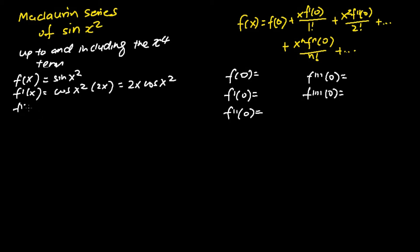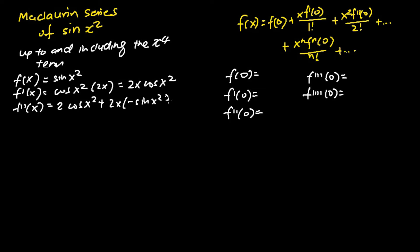For f''(x), we differentiate f'(x) one more time. In this case we have to apply the product rule of differentiation. We start with differentiating 2x to get 2, times cosine x squared. Then we differentiate cosine x squared to get negative sine x squared, and differentiating x squared gives 2x. Simplifying, we get 2 cosine x squared minus 4x squared sine x squared.